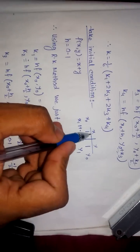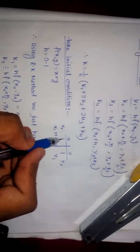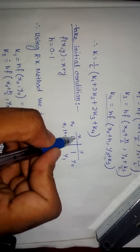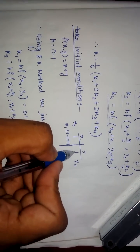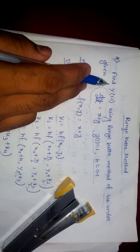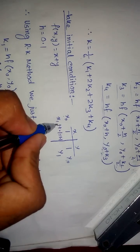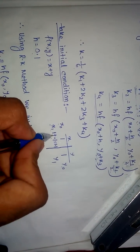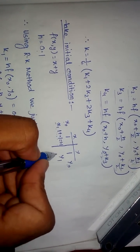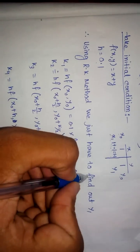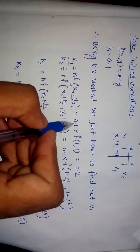The initial condition says y(1) equals 1, so at x equals 1 the value of y is 1. We take these as x₀ and y₀. We have to find y(1.1), so x1 in the next step will be 1 plus 0.1 — since h is 0.1 — giving 1.1. To find y1, we use the RK4 method with the formulas written here.